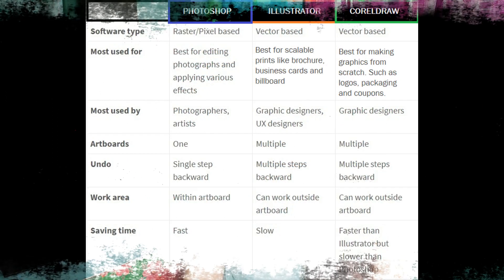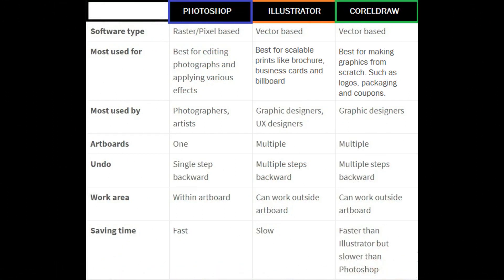Photoshop is most commonly used by photographers and artists, while CorelDRAW and AI are commonly used by graphic designers. In terms of artboards or pages, with Photoshop you can only use one artboard or page, while with CorelDRAW and AI you can use multiple pages.